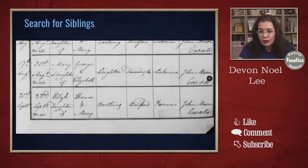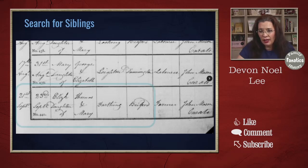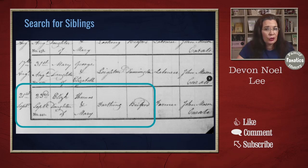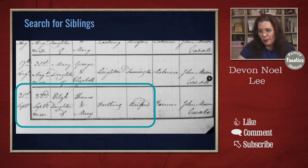We did find a sibling — Elizabeth, daughter of Thomas and Mary Farthing. I know this is the correct family because she's in Beeford and his occupation is farmer, and it just so happens that the same person performed that baptism.